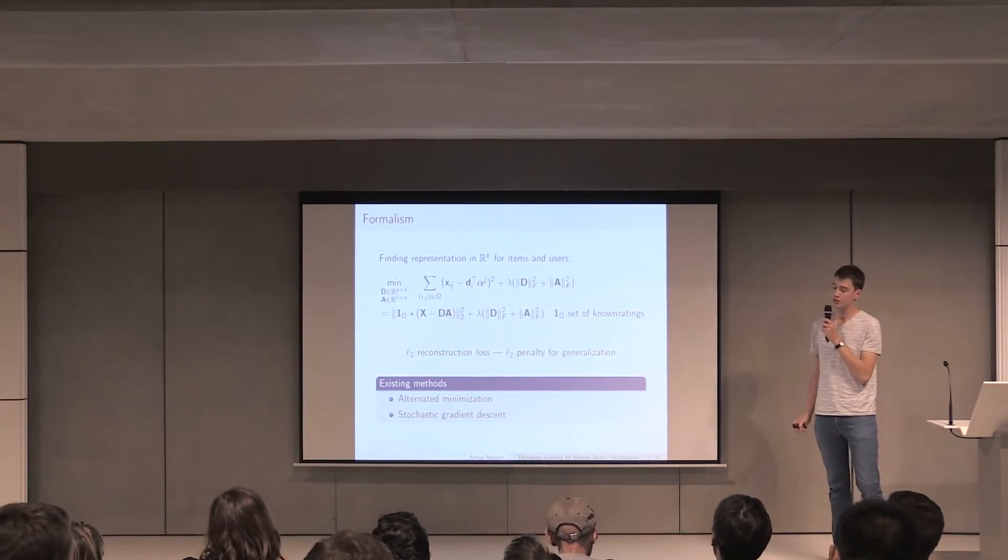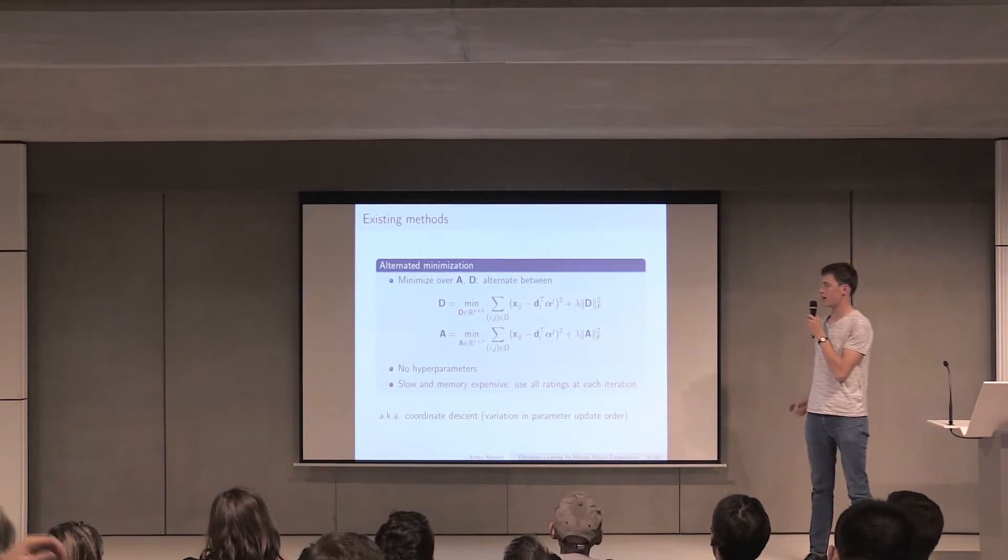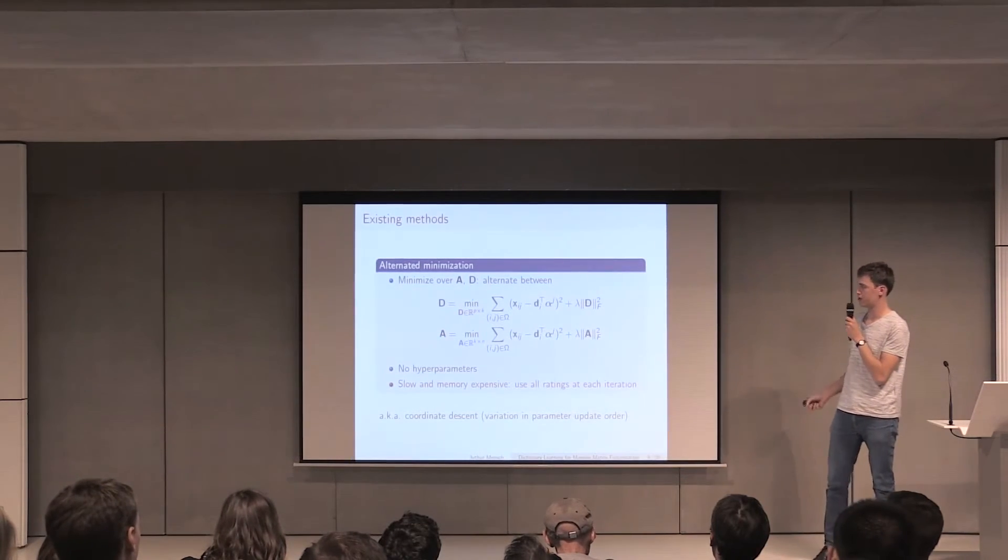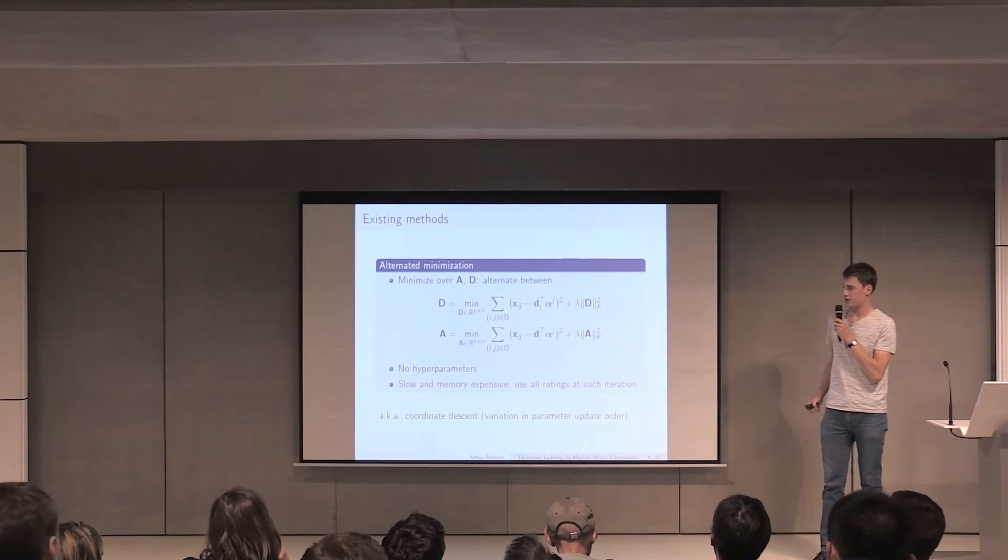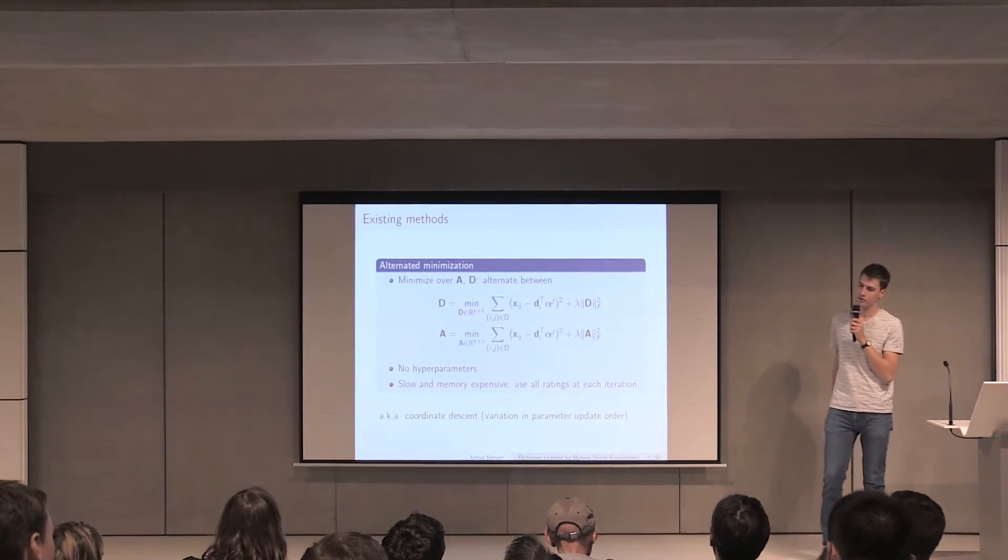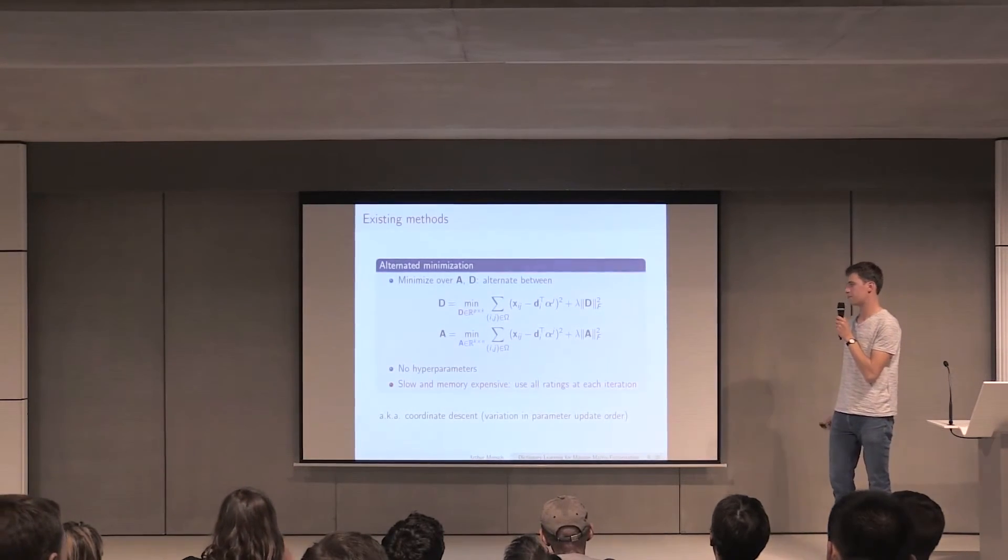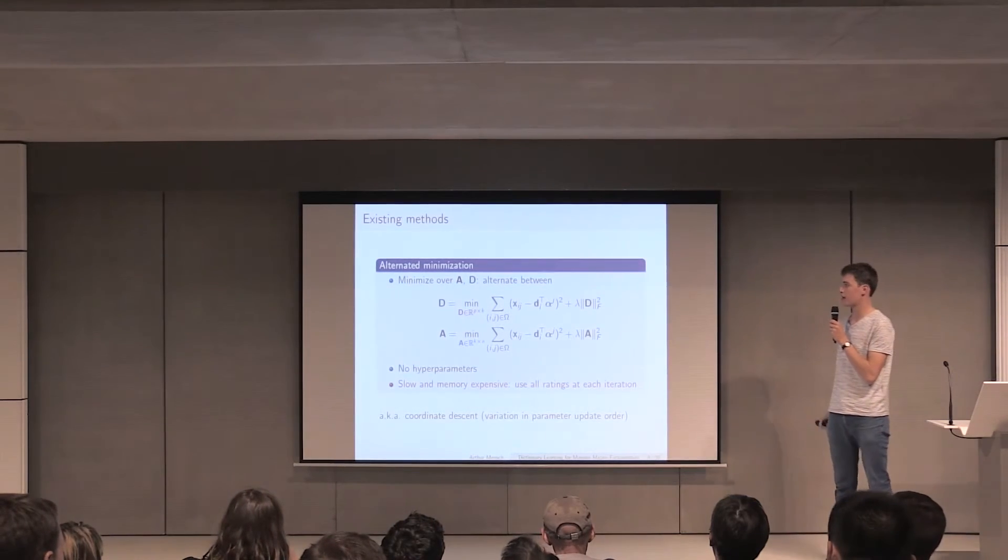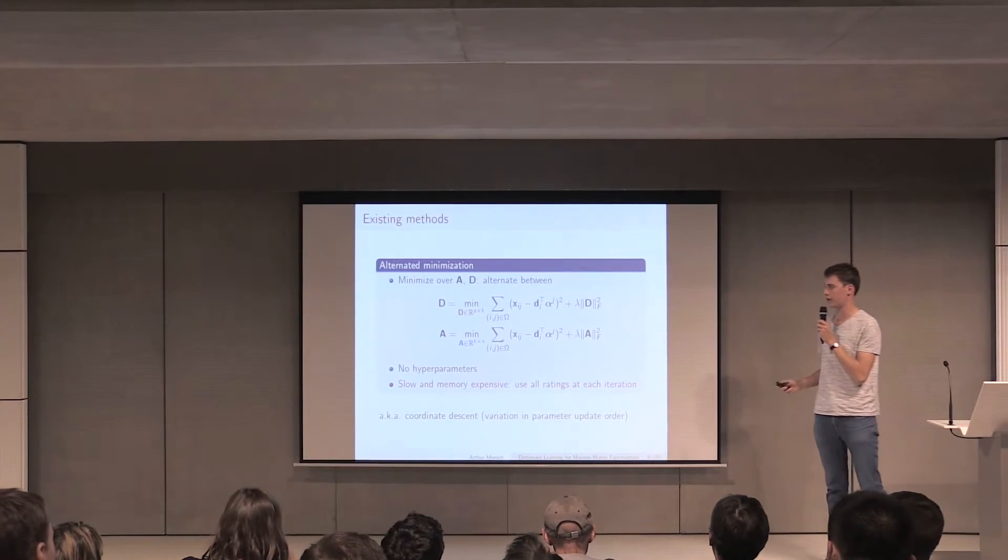There are two categories of methods that are typically used to solve this problem. The first one is alternating minimization, and the other is stochastic gradient descent. Alternating minimization basically takes the objective function above, which depends on two factors, D and A. What you do is you minimize over A, and then you minimize over D, and you repeat. Since the problem is convex in D and A, it typically converges. What's interesting about this is that there are no hyperparameters to set, which is very important if you have a very large dataset, because you don't want to cross-validate on the hyperparameter of the solver, because you will lose too much time. The problem with this kind of approach is that it's slow and memory expensive, because at each iteration, you basically load the whole dataset. This is also known as coordinate descent.